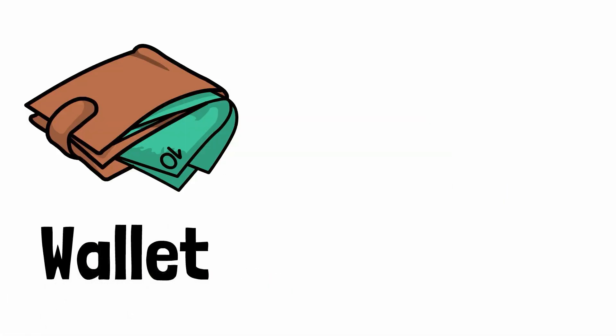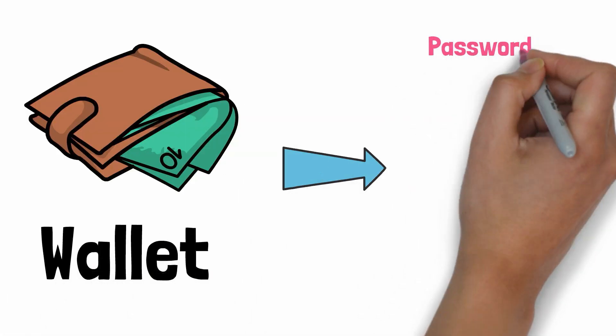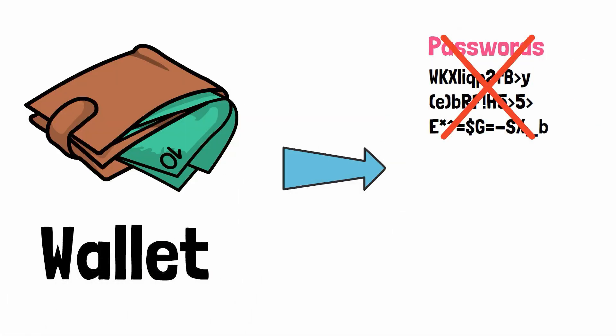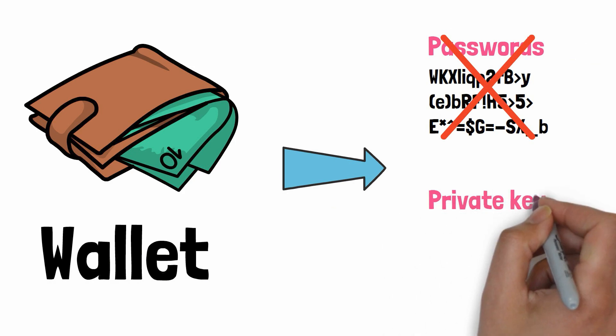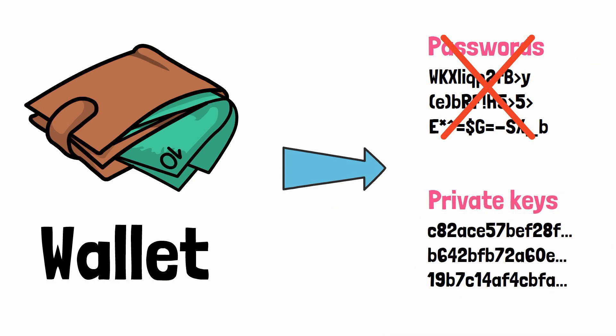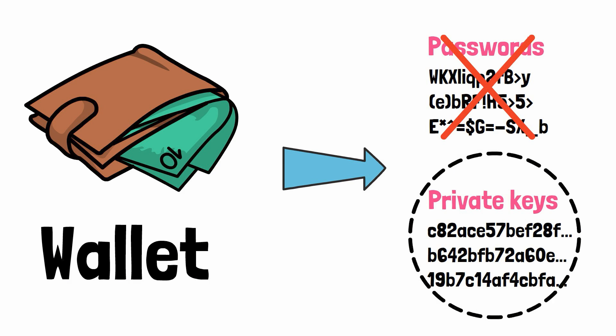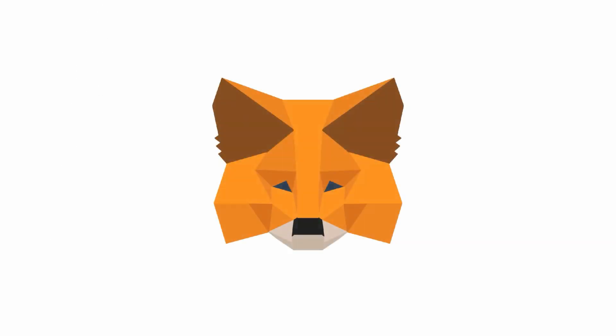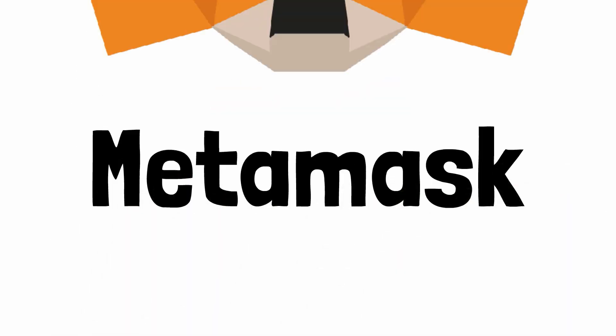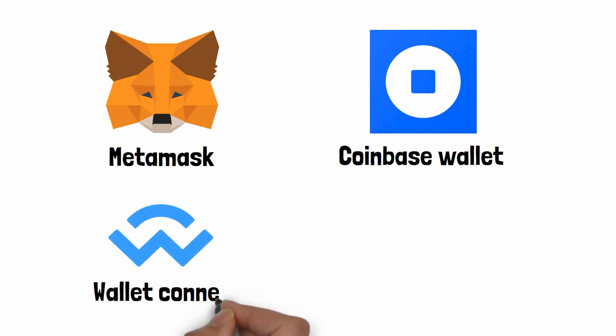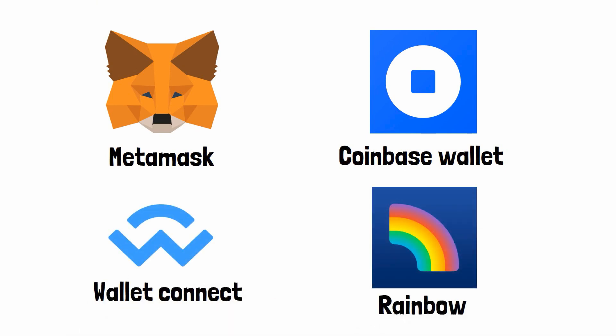The first step is to install a wallet. A wallet is like a password manager, except that instead of passwords, it manages private keys. With your private key, you will be able to interact with a token, like deploying a token on the blockchain or transferring tokens to another address. Tokpad accepts one of the following wallets: MetaMask, Coinbase Wallet, Wallet Connect, and Rainbow.